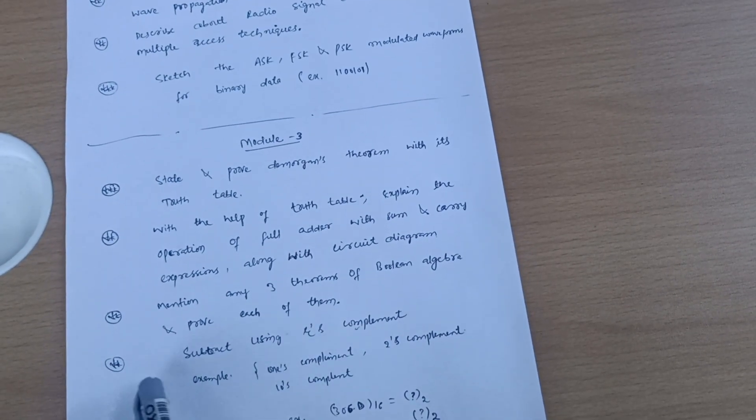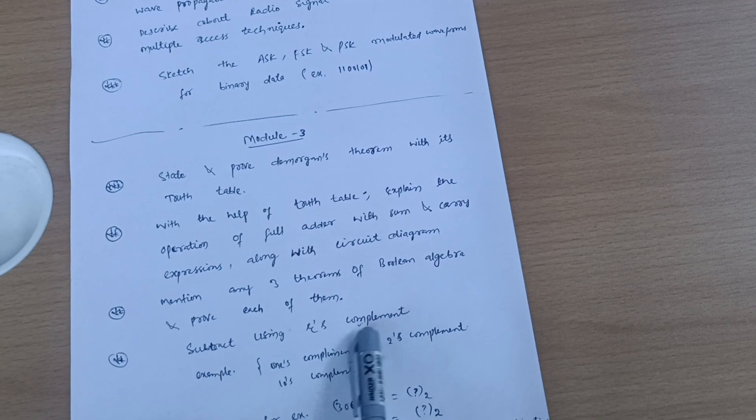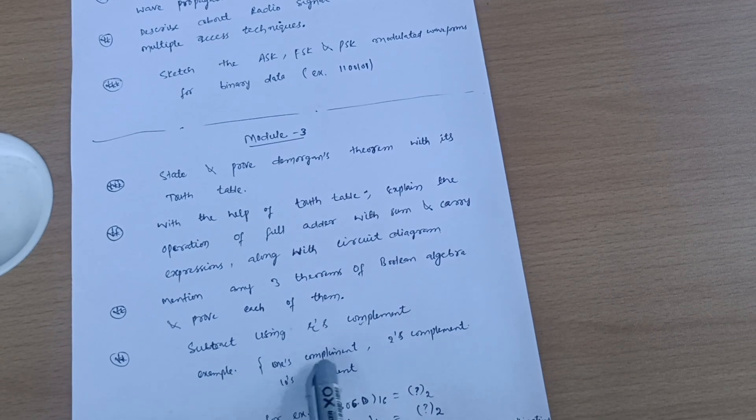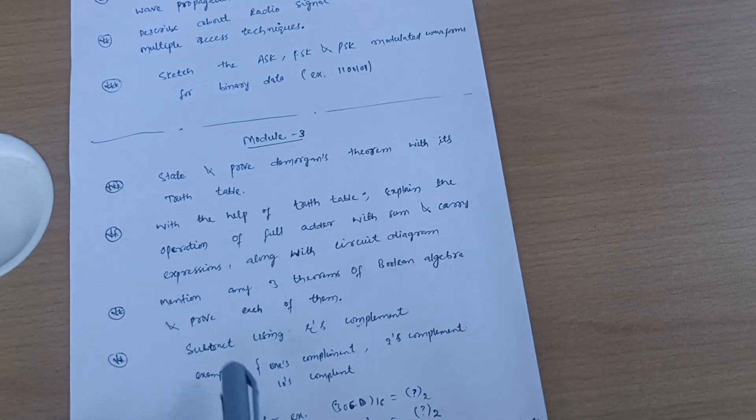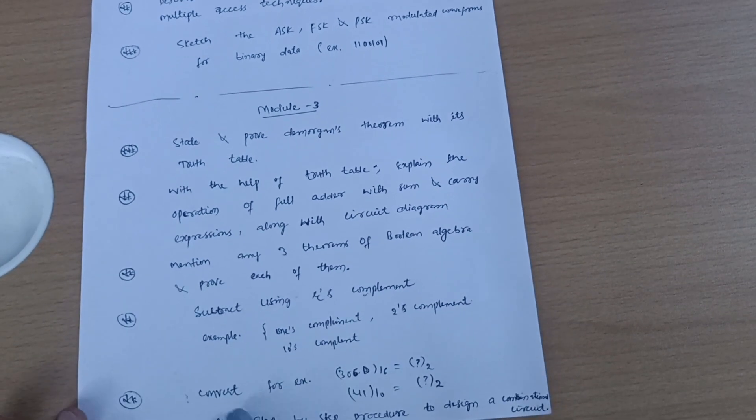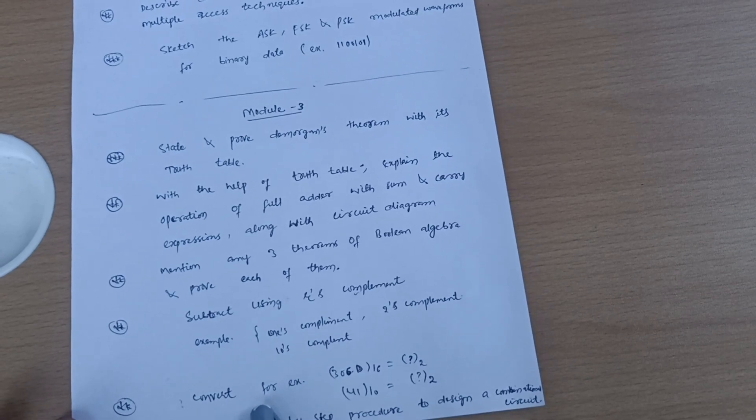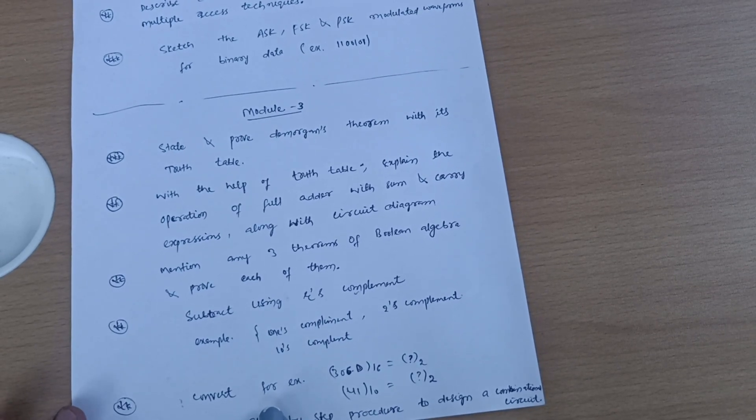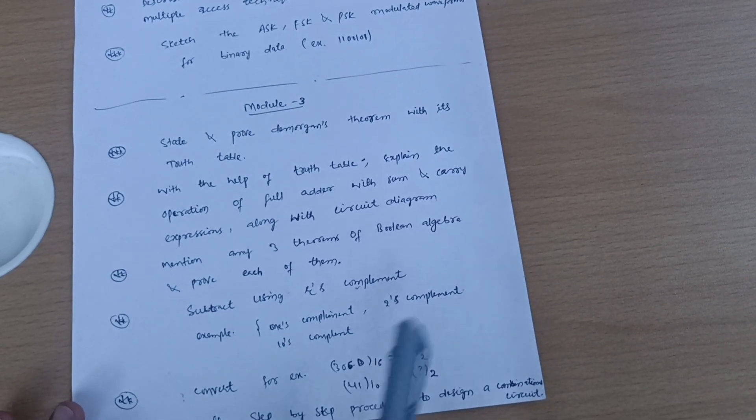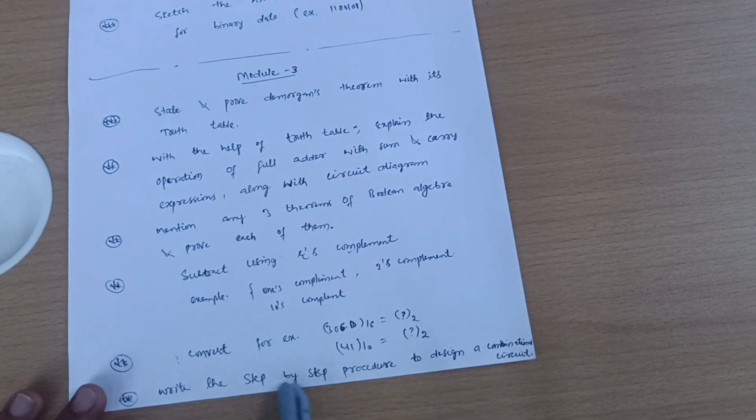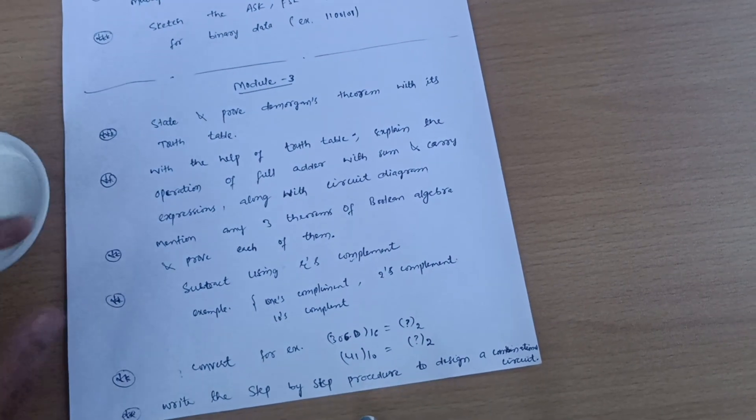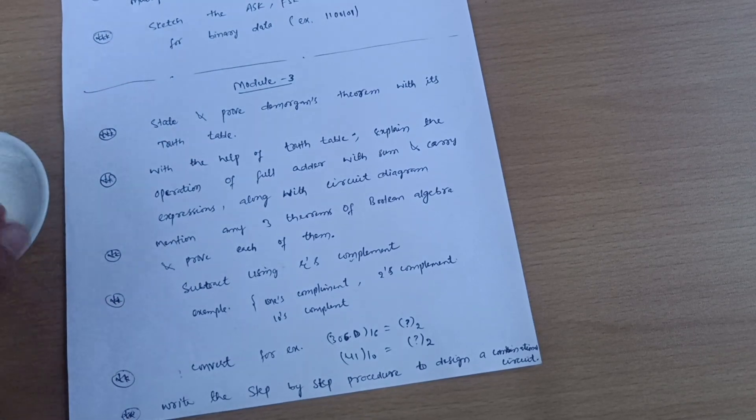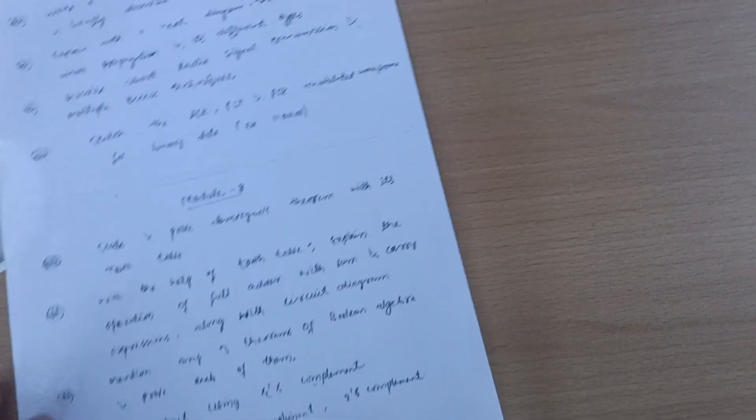Next is subtract using R's complement - there will be one's complement, two's complement, ten's complement questions. These are simpler ones. Go through conversion problems also - binary to octal, octal to hexa, like that. Write the step-by-step procedure to design a combinational circuit. These are five questions from Module 3 you have to go through if you want to score.